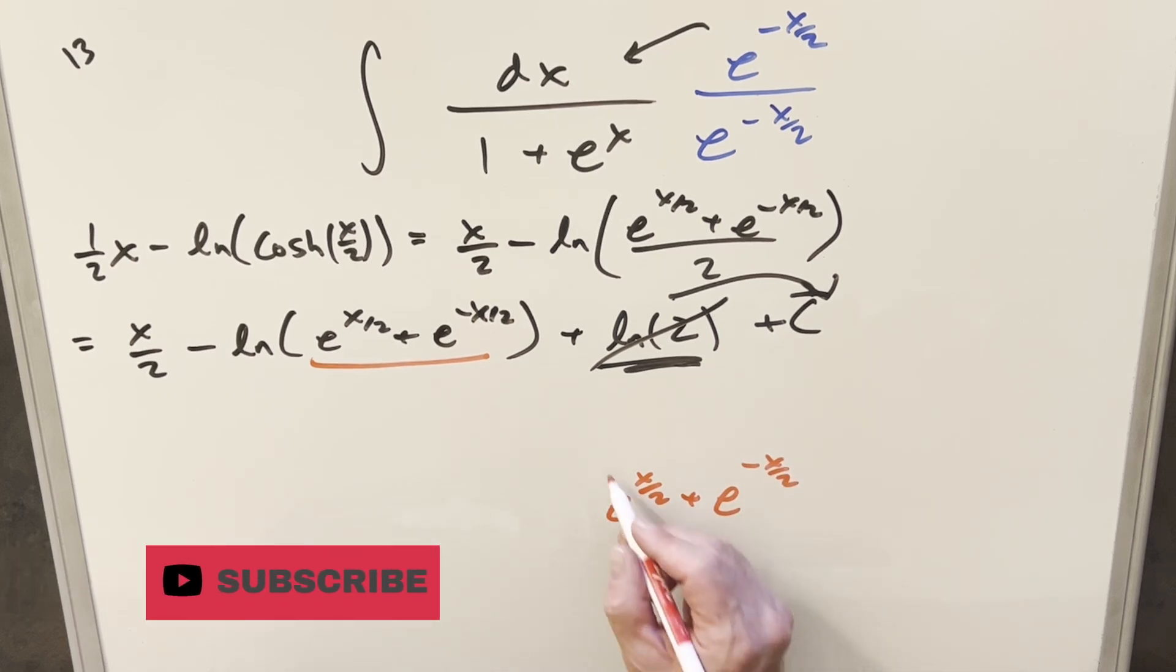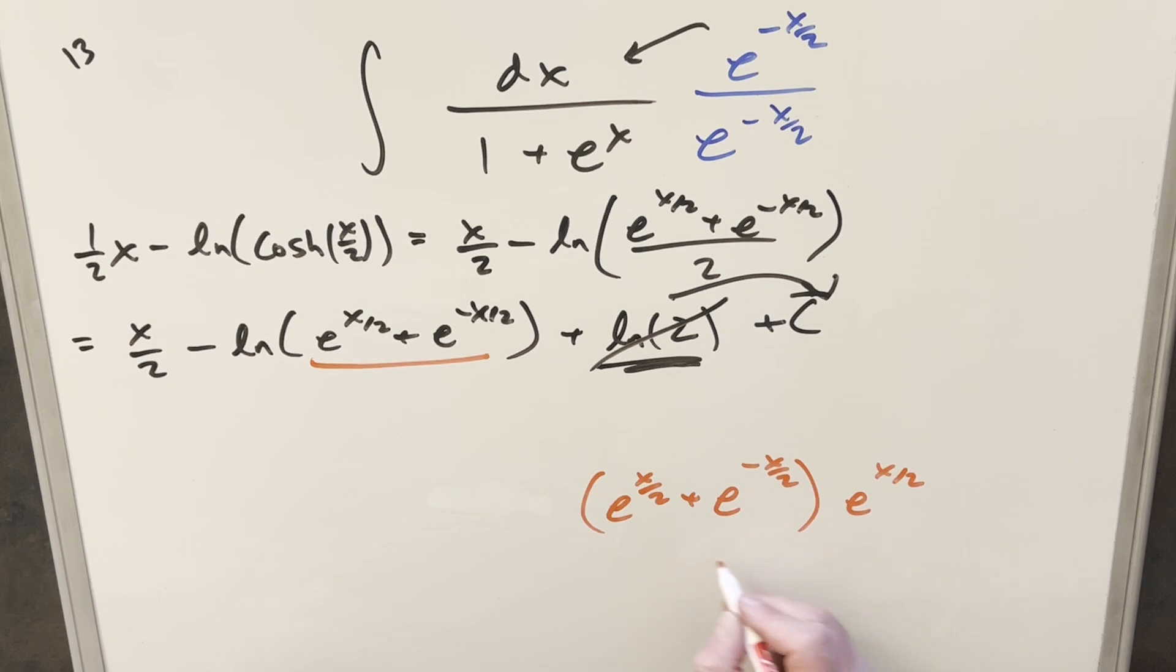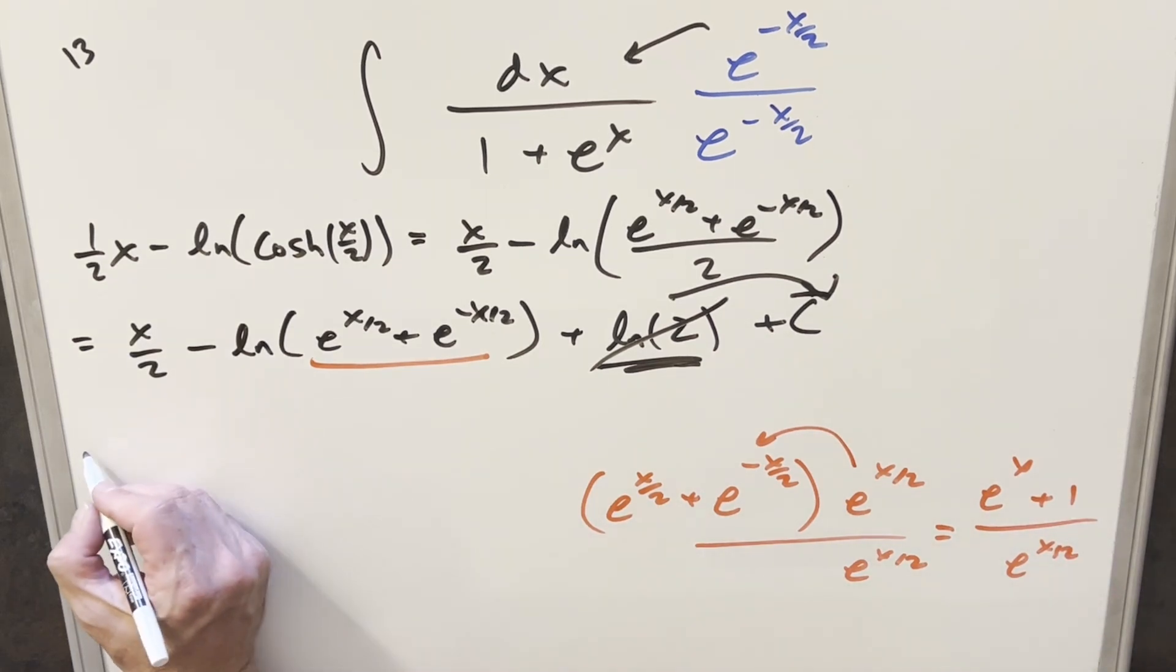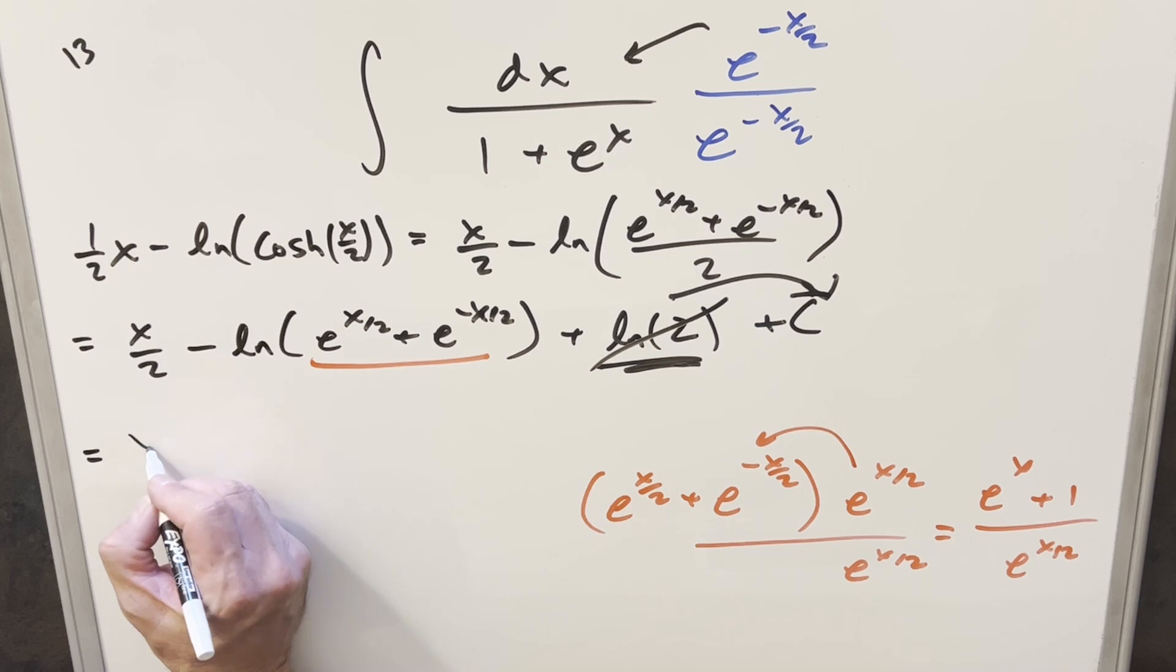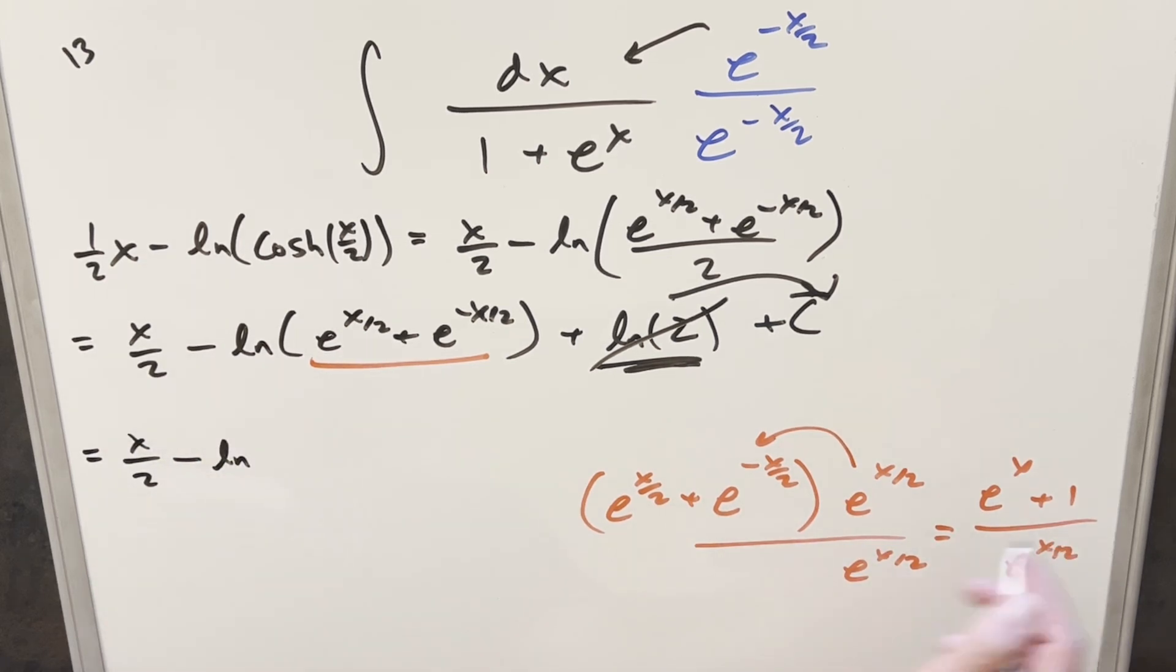If I take this, if I just multiply this by e x over 2 over e x over 2. Now I'm just multiplying by 1. Then distributing this in here, what we're going to have, the first term is going to be e to the x. This times this is going to be just a plus 1 over e x over 2. So then let's take this and put it back in the natural log. But what I'm going to do is split it up again with log properties. So we have x over 2. Then I'm just going to take the numerator, natural log e x plus 1.